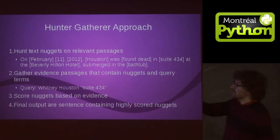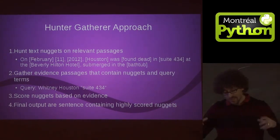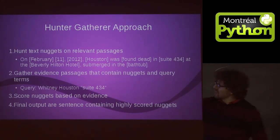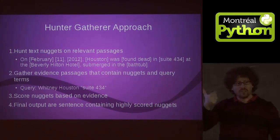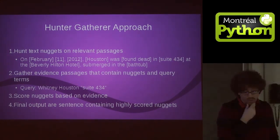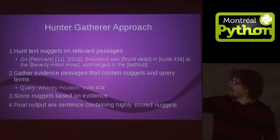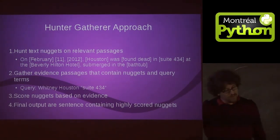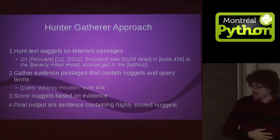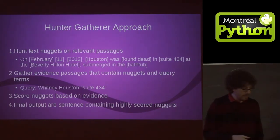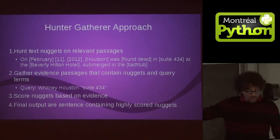Here is what we mean by hunting text nuggets. You get a passage as returned by a search engine on top of those 200 pages, and then we chunk them in a smart way to find which things could be relevant pieces of information for this query. Then we do recursive searches where we take the original query plus the nugget — like 'Whitney Houston dead suite 434' — and gather more extra passages to use as evidence. Then we score these things with a variety of scoring methods, and find the sentences that contain the highly scored nuggets. And we wrote all this in a month and a half.